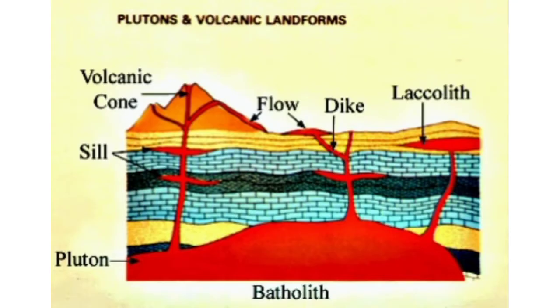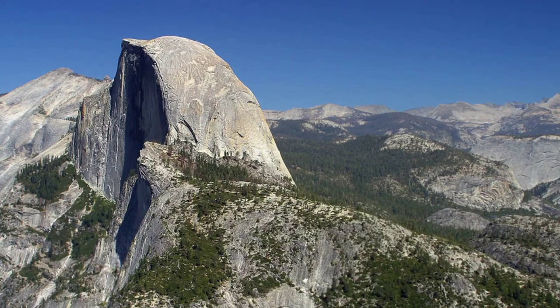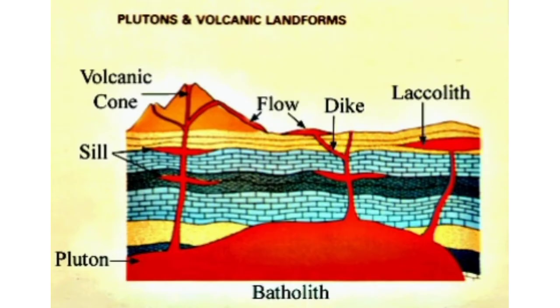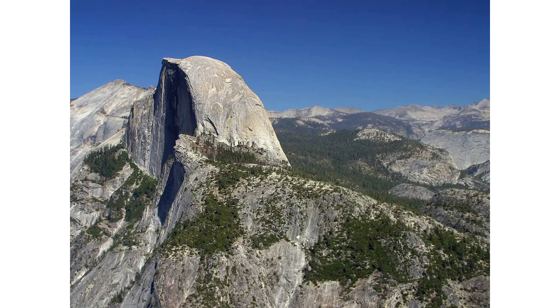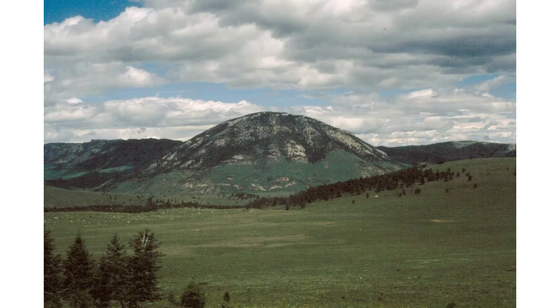Then comes the batholith. It lies at the bottom, and from this batholith, pipe-like conduits supply lava to the saucer-shaped lopolith, dome-shaped laccolith, and lens-shaped phacolith. Batholith is the largest and lies at the bottommost layer of the crust.